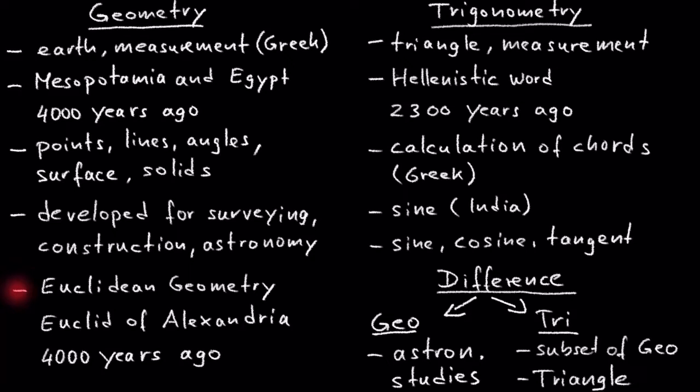There are many types of geometry, but school math is primarily Euclidean geometry, named after the Greek mathematician Euclid of Alexandria who lived 4,000 years ago.